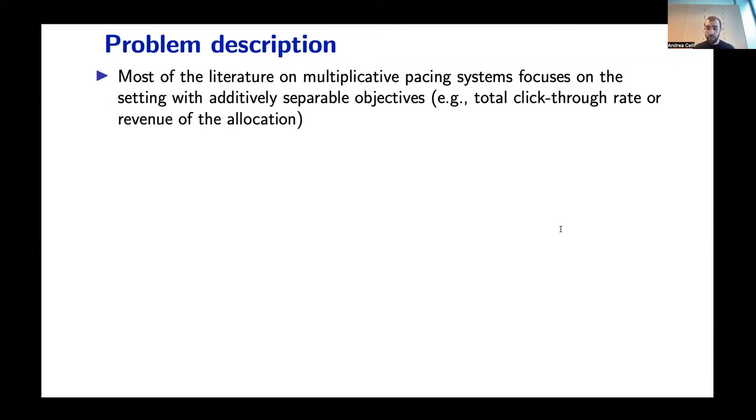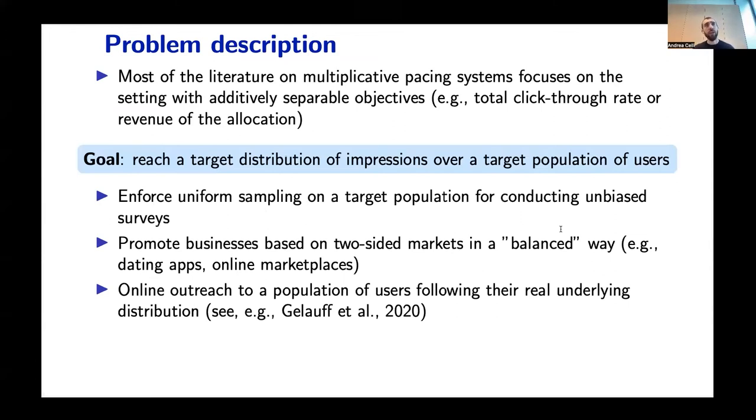Usual objectives that are studied are optimizing the total click through rate or the revenue of the allocation. However, we argue in the paper that in many settings the advertisers may be interested in objectives which are not additively separable. The specific objective that we consider in the paper is reaching a target distribution of impressions over some target population of users. This specific question is interesting for a number of practical applications. The first one is enforcing uniform sampling on a target population of users to conduct surveys. The second one is promoting businesses which are based on two-sided markets in a balanced way. And finally, all these techniques could be useful to perform online outreach to some population of users following the real underlying distribution.